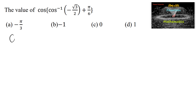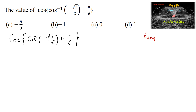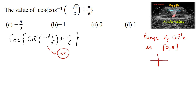Find the value of cos(cos⁻¹(−√3/2) + π/6). We know that the range of cos⁻¹(x) is [0, π], which covers the first and second quadrant. Since the input is a negative value, cos⁻¹(−√3/2) will definitely lie in the second quadrant.